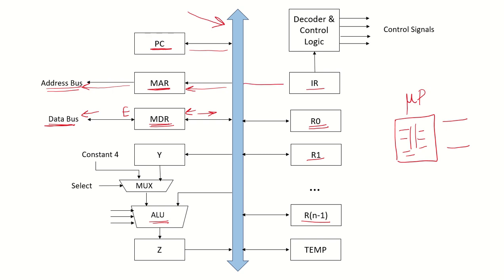We have an instruction register (IR) which takes input from the internal bus and passes it on to the decoder and control logic, which can then send control signals. The IR keeps the instruction currently being executed; once received in the IR, it is sent to the decoder and control logic which decodes the instruction and generates appropriate control signals. Apart from these, there are also certain temporary registers: Y, Z, and TEMP.